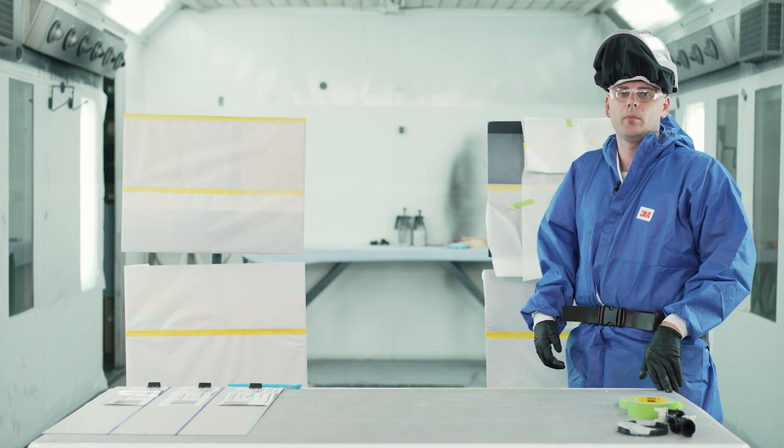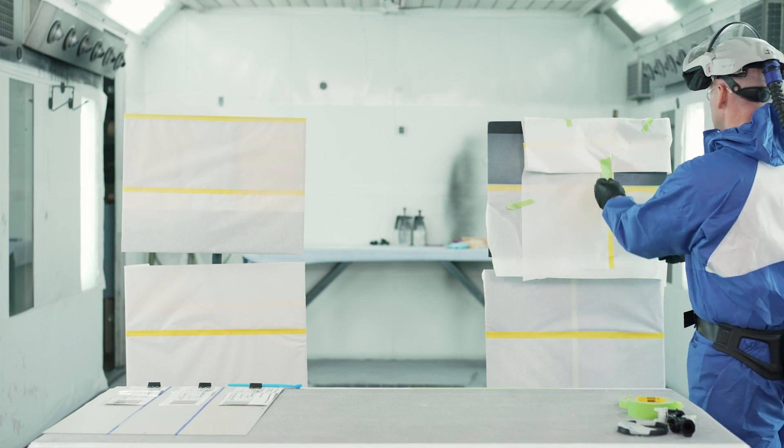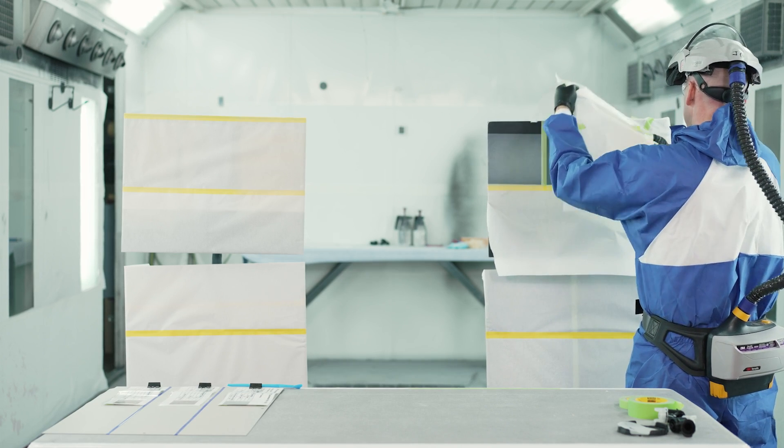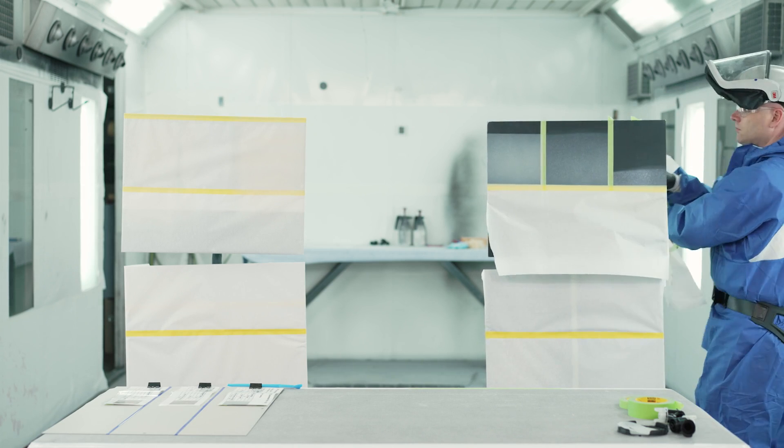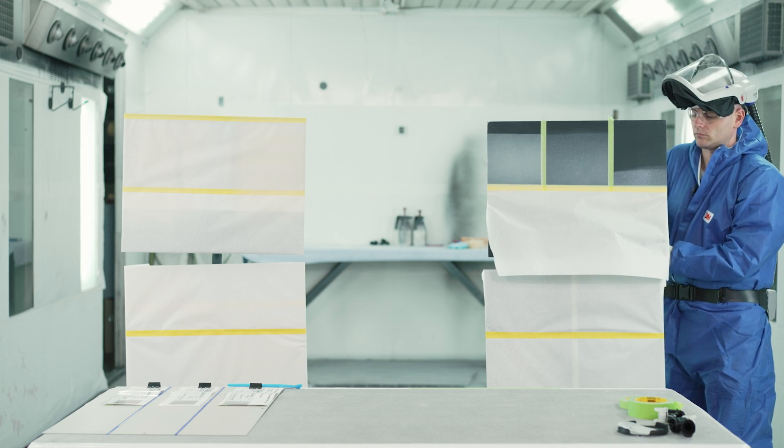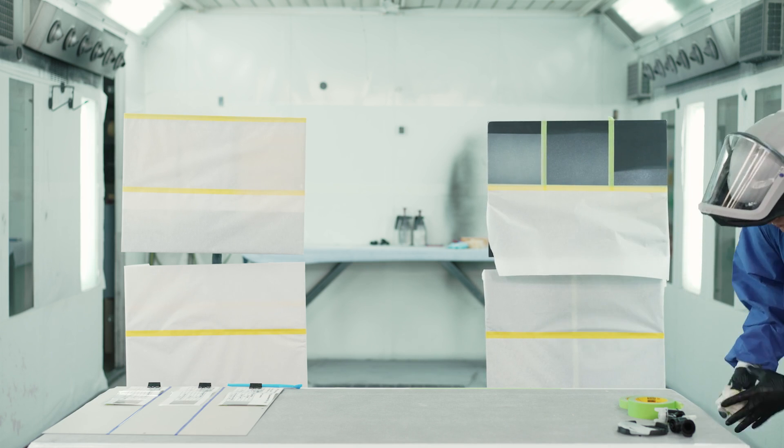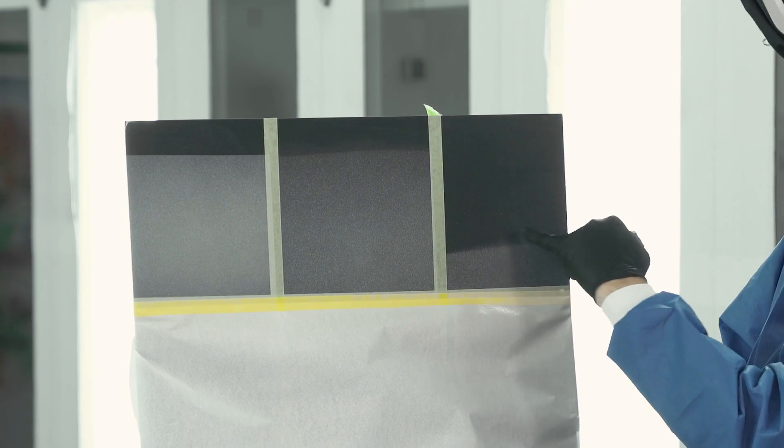Just like before, we've let this sit about 30 seconds to a minute, and now we're ready to peel our masking. So again, we staggered our paper from being a little bit closer to a little bit further away, and you can see on our panel from left to right, how much longer that transition gets as we move across the panel.